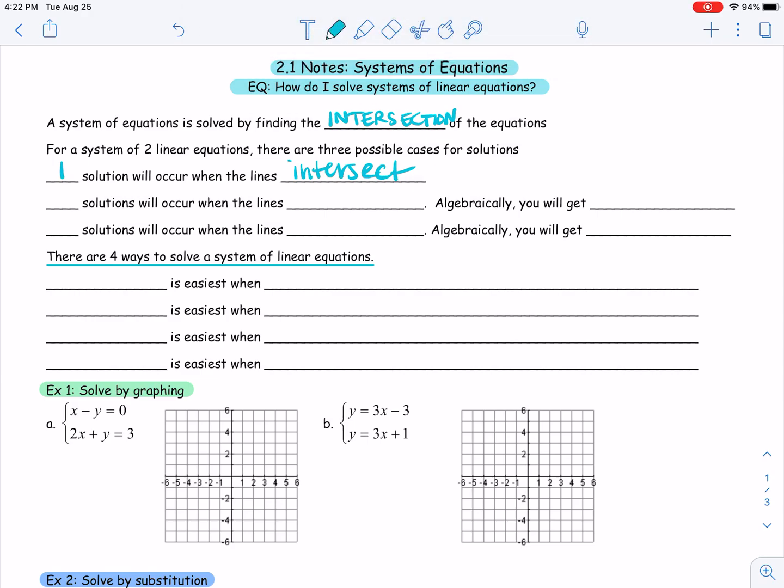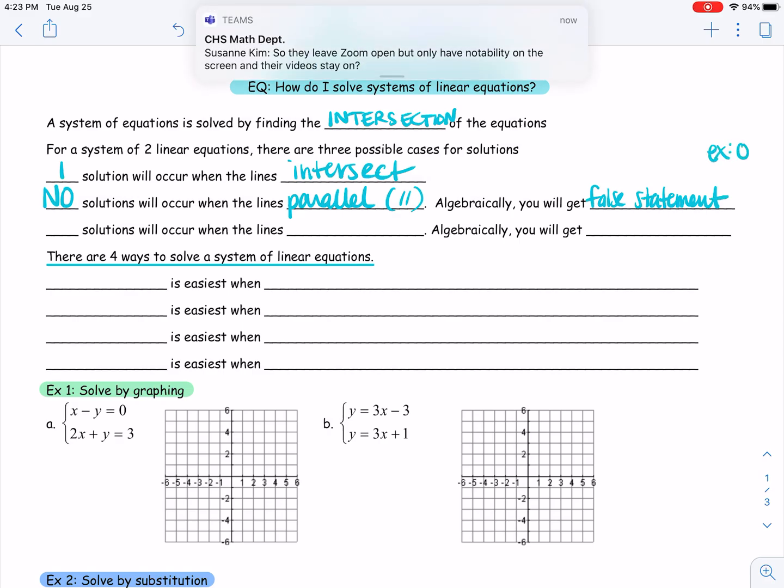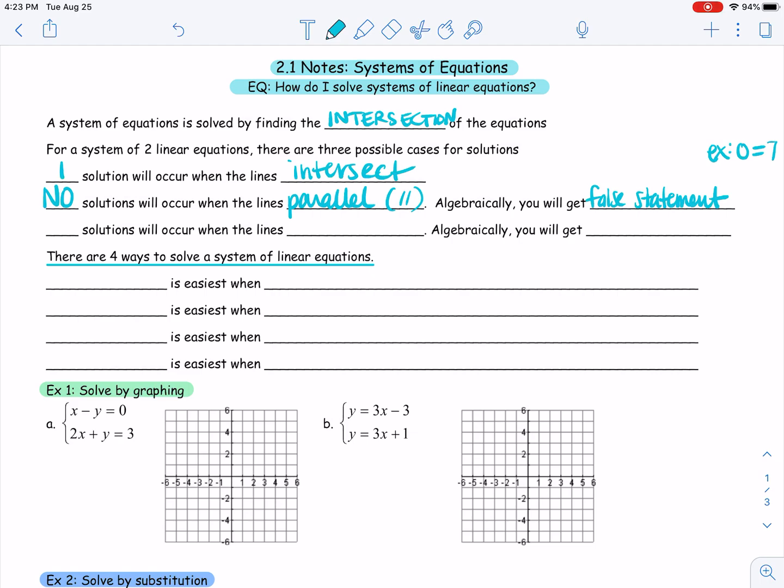What else could happen? You could have no intersection at all, which means those lines would be parallel. So you can have no solutions when those lines are parallel. Obviously, they're not intersecting, so you wouldn't have a solution there. If you were working this algebraically, then you would get something like a false statement.